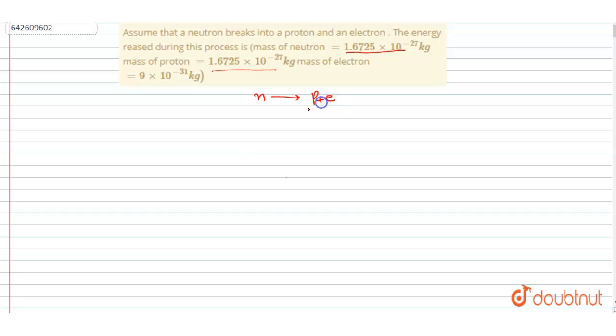Change in mass will be mass of proton plus mass of electron minus mass of neutron. Mass of proton and neutron are the same, so it will be simply mass of electron.